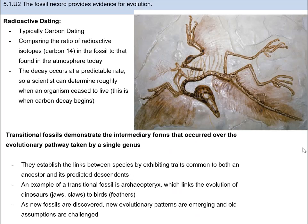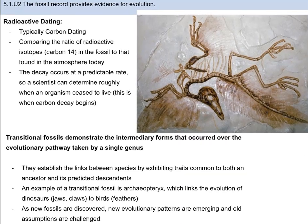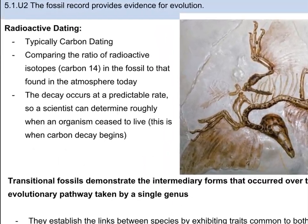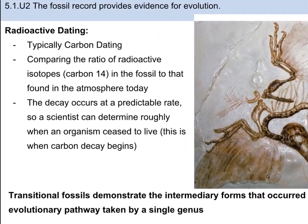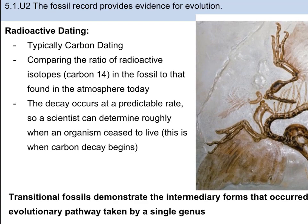One way of determining when a fossil was an actual living beast is to look at the amount of radioactive carbon that is present. Usually carbon is used, as all living things are composed of carbon. When an organism dies, the radioactive carbon begins to break down and occurs at a predictable rate. Scientists can then do the math and determine when it died.